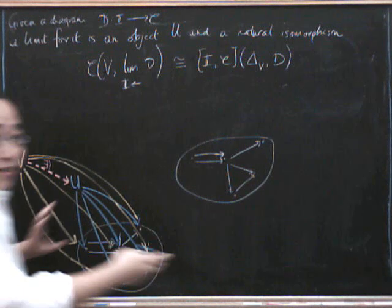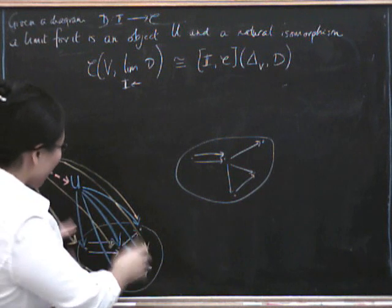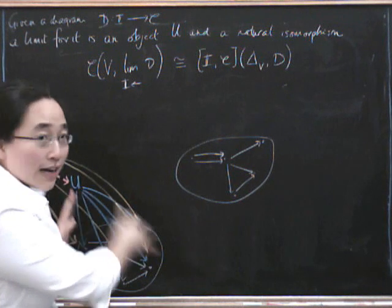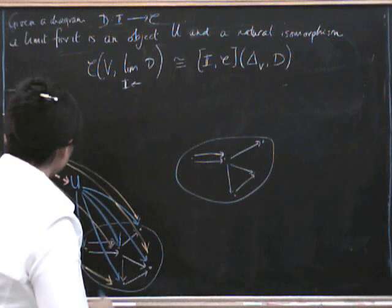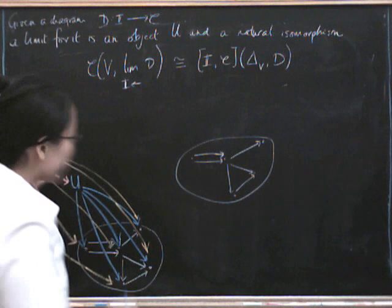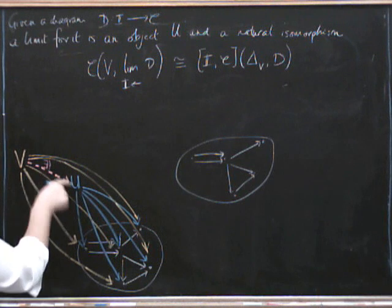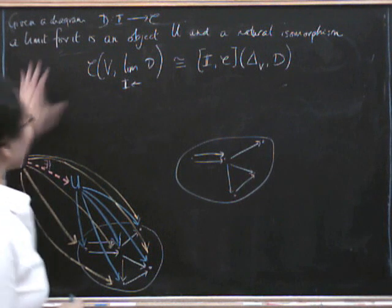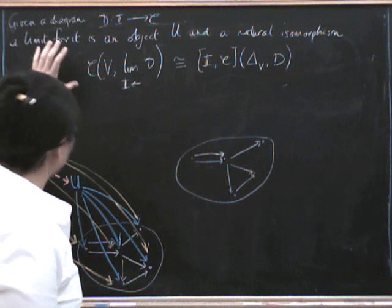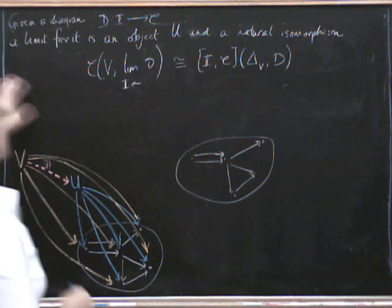Now I've left on the board the diagram we had of this limit, where remember the blue cone is our limit cone, which is a universal cone, and the universal condition was given any cone, for example this orange one, there is a unique factorization in pink here, and I've written the formal formula for it up here.